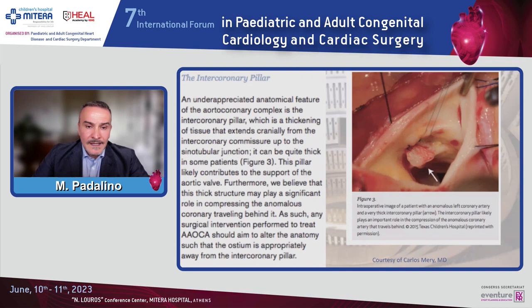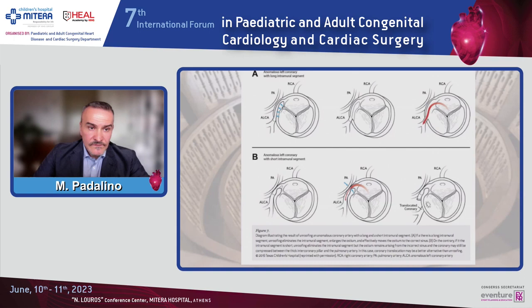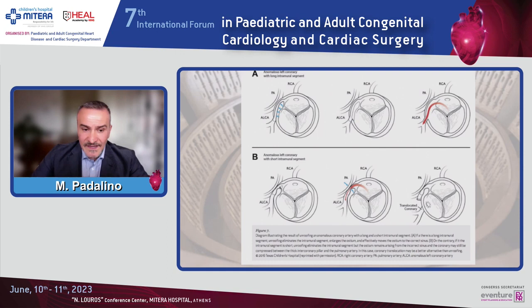An important anatomical feature is the so-called intercoronary pillar — thickened tissue going cranially from the intercoronary commissure to the sinotubular junction — which contributes to support of the aortic valve. When doing an unroofing with a long intramural segment, you can obtain a good result with a large ostium and thus large coronary perfusion. However, if the intramural segment is short, the intercoronary pillar can press and reduce the effectiveness of the procedure, leaving stenosis. In that case, another technique is needed.